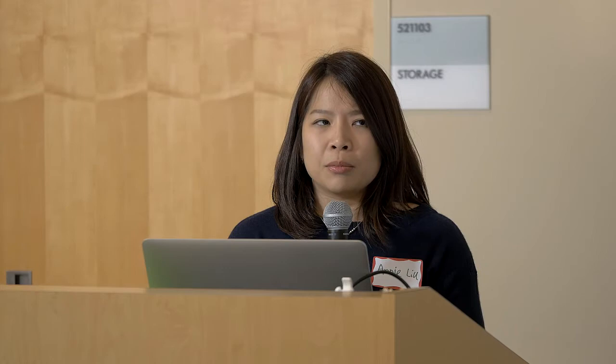By learning the Gaussian mixture model, we face another problem: it takes a lot of samples to learn a correct model, and if we want to retrain daily, we need to store large amounts of data on the phone — more than we have capacity for. So how do we get around this?